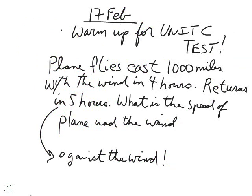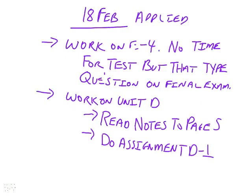Warming up for the unit test. What happens if a plane flies east 1,000 miles — like Winnipeg to Toronto — in four hours, and it takes five hours to come back into the wind? What is the speed of the airplane and the speed of the wind? We had solved that.